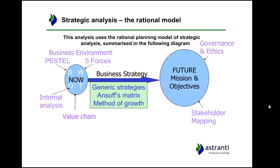The whole idea of strategic analysis follows the rational model, and each theory feeds into a different aspect of the business — ranging from where the business is now, which is covered by PESTLE, Five Forces, the business environment, our value chain and all the internal analysis we can generate. This feeds into our business strategy, including Ansoff's matrix method of growth. But importantly, fundamental to any business is always our mission — where are we going, what's the future, what do we want to do — and involved in this is stakeholder mapping and governance.